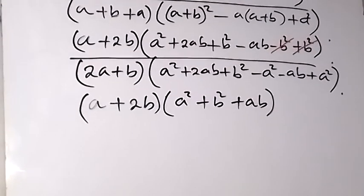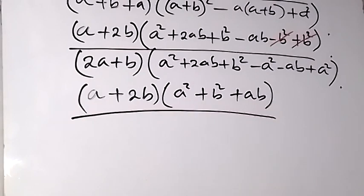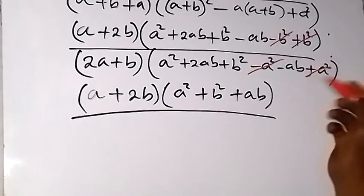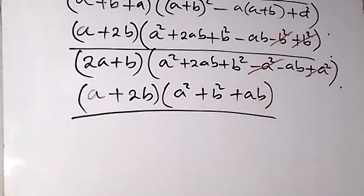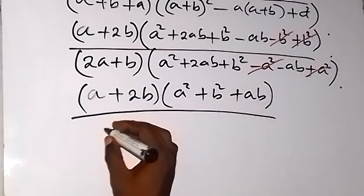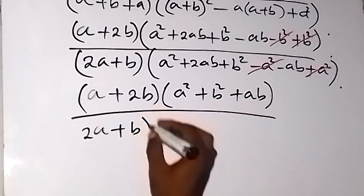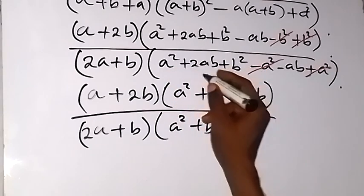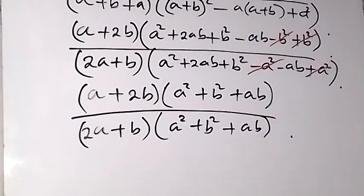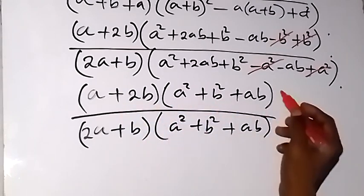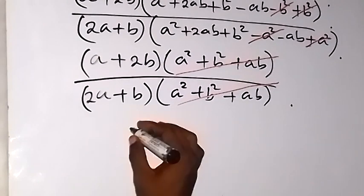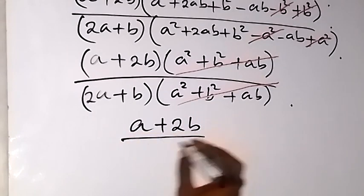Now we can see that what is in the bracket up here and down here are the same thing — (a squared plus b squared plus ab) appears in both numerator and denominator. So we cancel them, and we are left with (a plus 2b) in the numerator divided by (2a plus b) in the denominator.